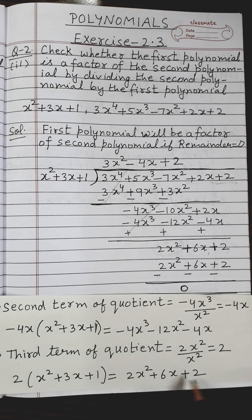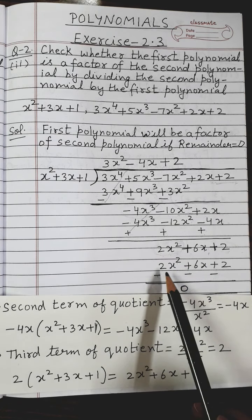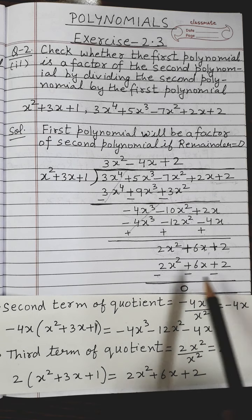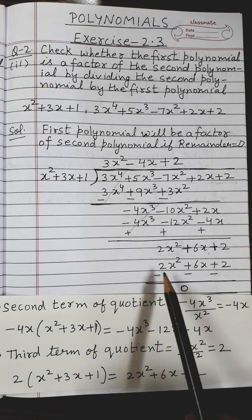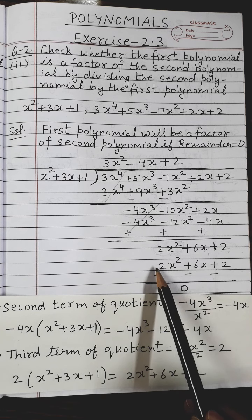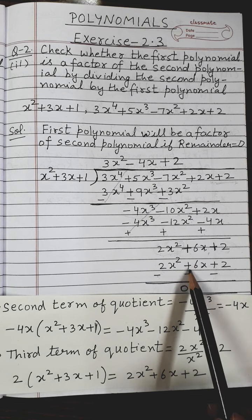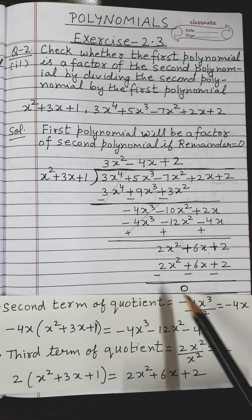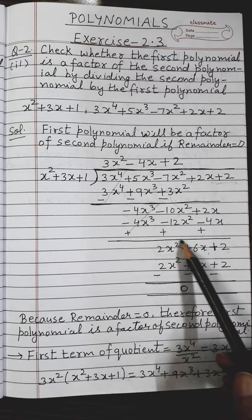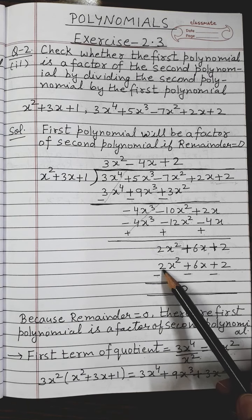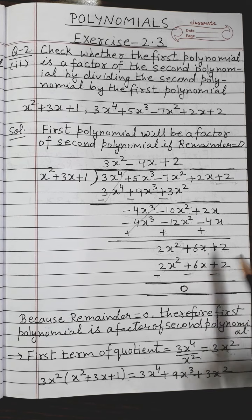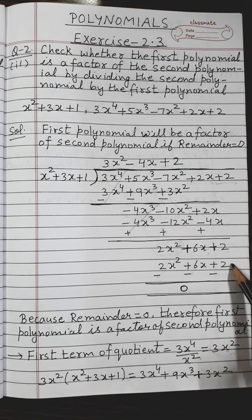I write 2x² + 6x + 2 below the polynomial and subtract. Reversing the signs of the second polynomial: plus becomes minus, plus becomes minus, plus becomes minus. Carrying out the subtraction: 2x² - 2x² = 0, which I cancel; +6x - 6x = 0; +2 - 2 = 0. So the overall remainder comes out to be 0.